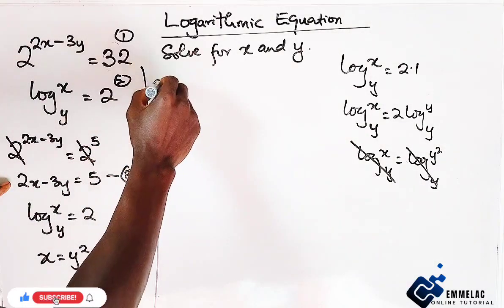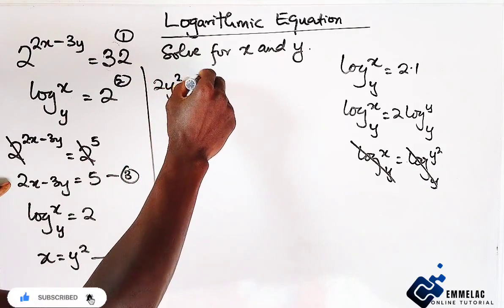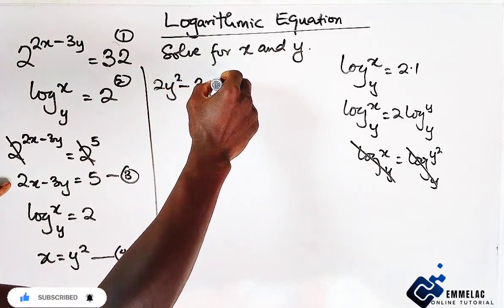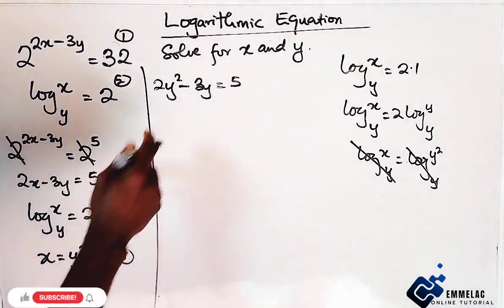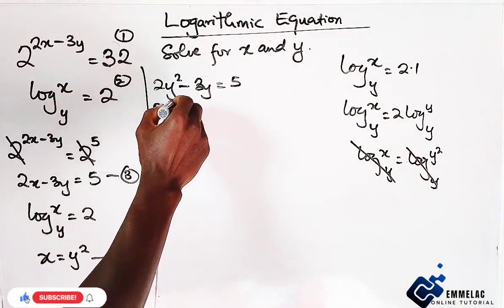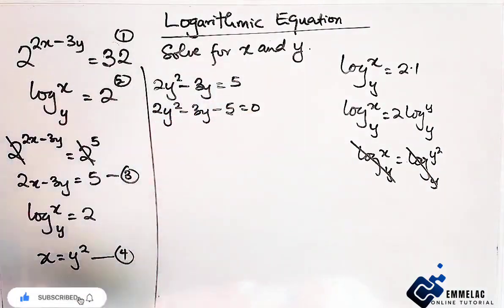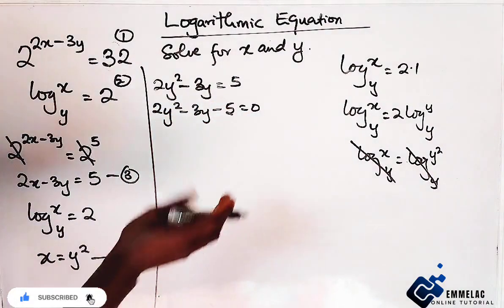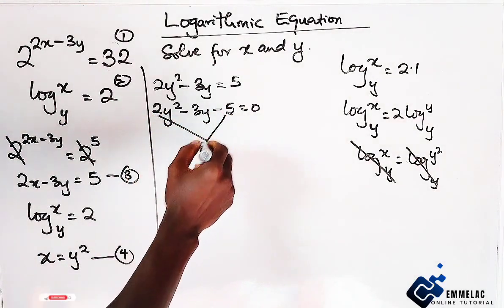And by so doing here, we have 2 y raised to the power of 2 minus 3y, then equals 5. I guess we are arriving to the quadratic equation 2y squared minus 3y minus 5 equals 0.